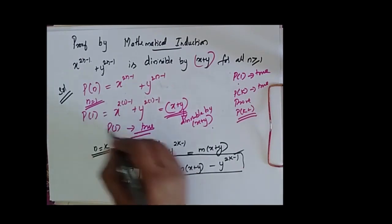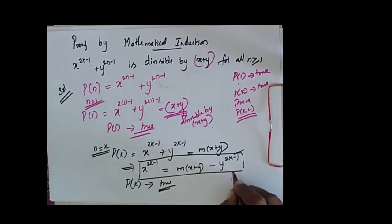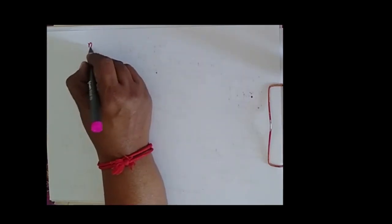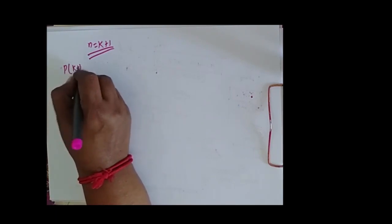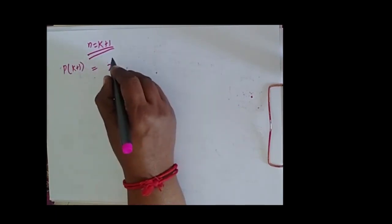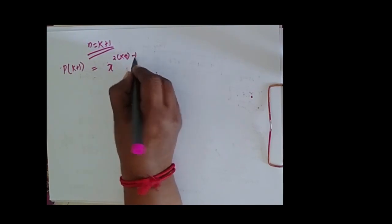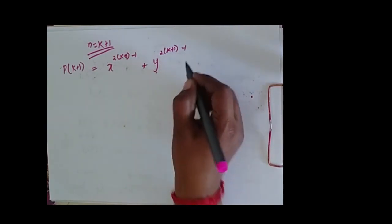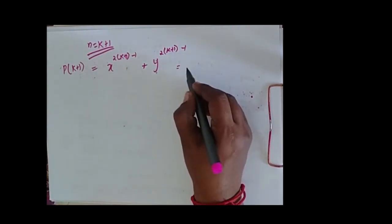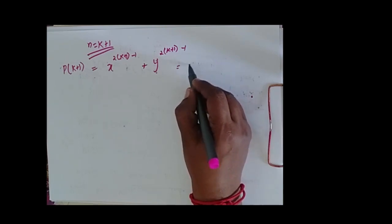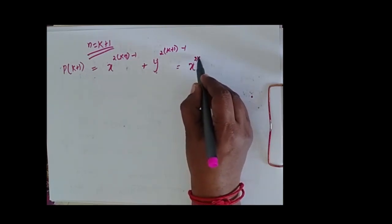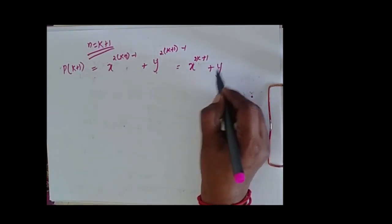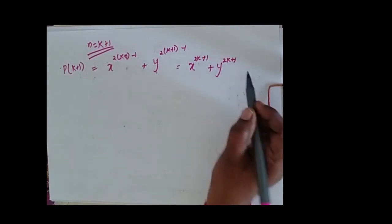Now I have P of 1 is true, P of k is true, and I have to prove for P of k plus 1. My n is k plus 1 and I have to prove it. So P of k plus 1 is equal to x power 2 into k plus 1 minus 1 plus y to the power 2 into k plus 1 minus 1. This can be rewritten as x power 2k plus 1 plus y power 2k plus 1.